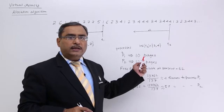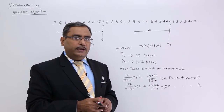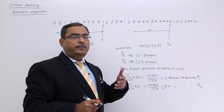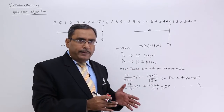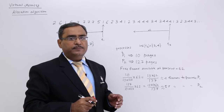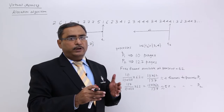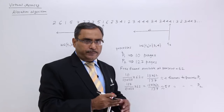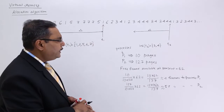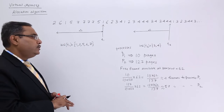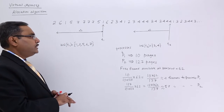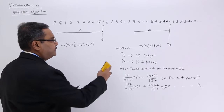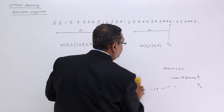This is the allocation algorithm — when more than one process arrives and we have a limited number of free frames, this proportional method decides how frames get allocated to each process. The next topic we are going to discuss in this session is the working set model.